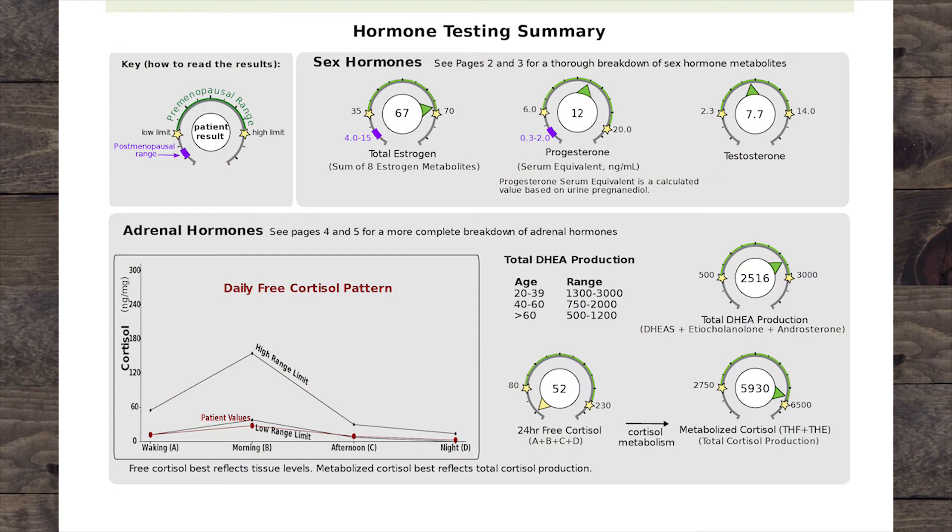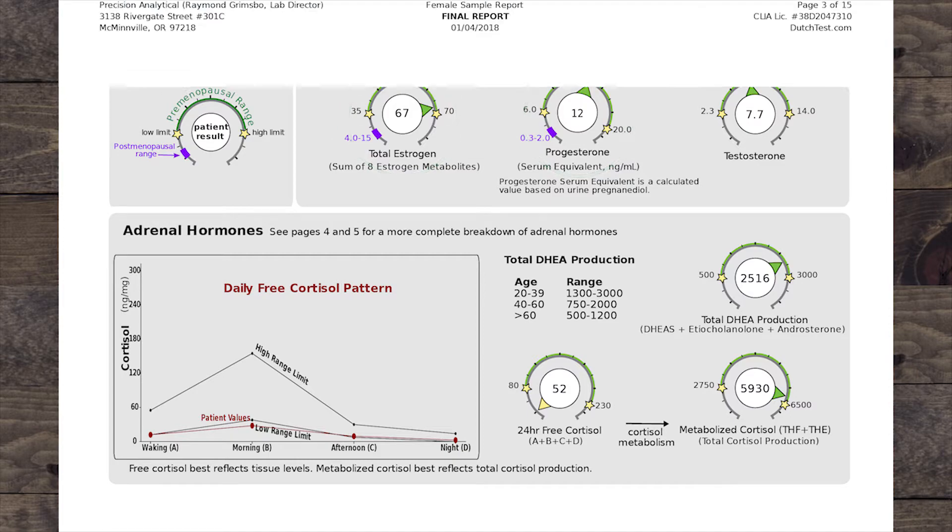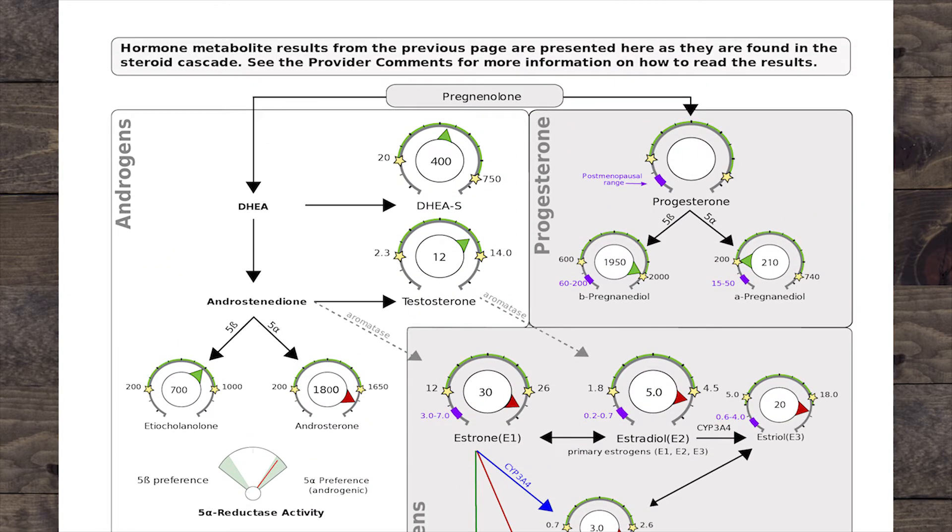You've seen on page one the total of the estrogens and progesterone as a serum equivalent for female patients. As we dig into page three, we can see the detailed breakdown of all these hormones. Starting with progesterone, we can see there are two primary metabolites here. The reason there's no number listed for progesterone is because it's not in urine.